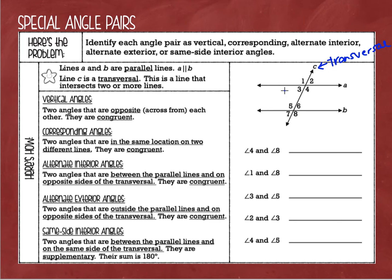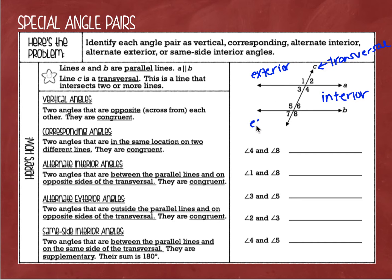When you have a pair of parallel lines, the angles in between the lines are considered to be the interior angles. The angles that are not in between the parallel lines are considered to be the exterior angles. So our exterior angles are 1, 2, 7, and 8, and our interior angles are 3, 4, 5, and 6.